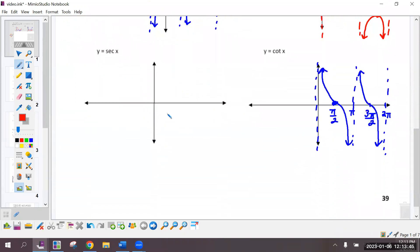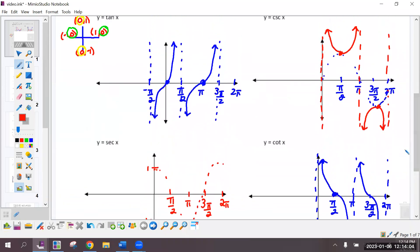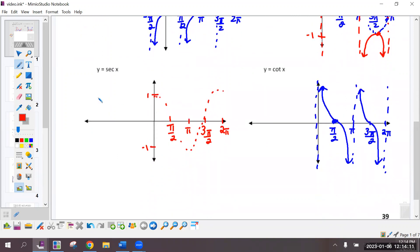And then secant, we're going to build that off the cosine graph. And secant is the reciprocal of cosine. I should have labeled this 1 and negative 1. And so anywhere that cosine has an x-intercept is an asymptote for secant. This point is going to flip up. This one's going to flip down. This one's going to flip up.